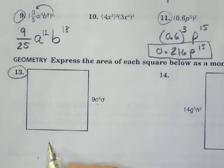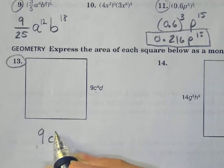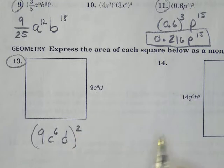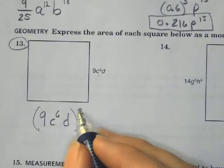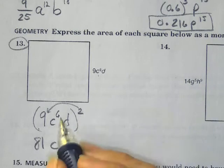So basically what they're saying is, I have 9c to the 6d, and because it's a square, we're going to square the whole thing. So by squaring the whole thing, 9 squared is 81, c to the 6th squared,